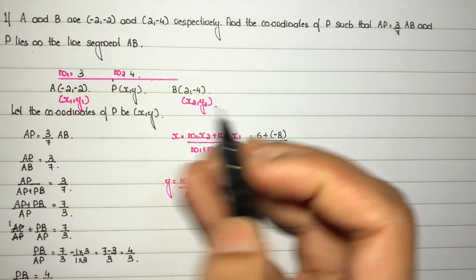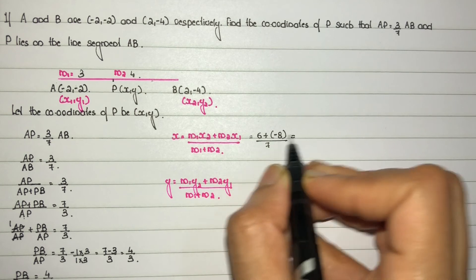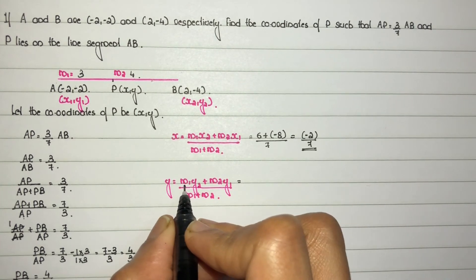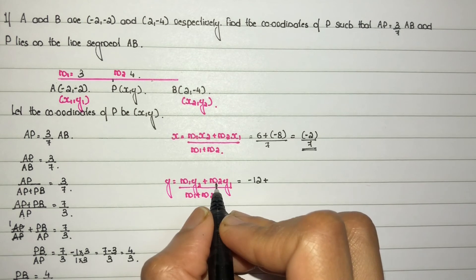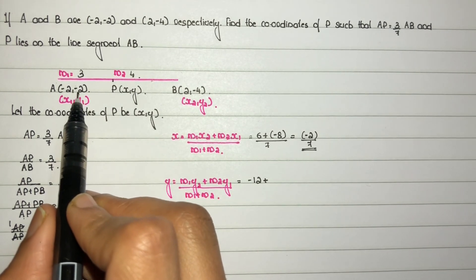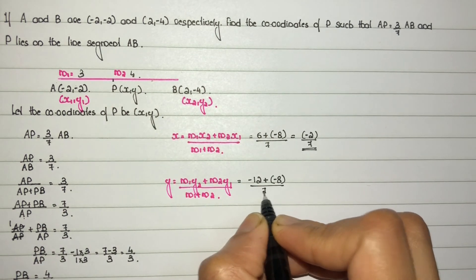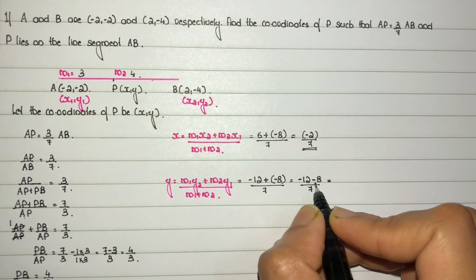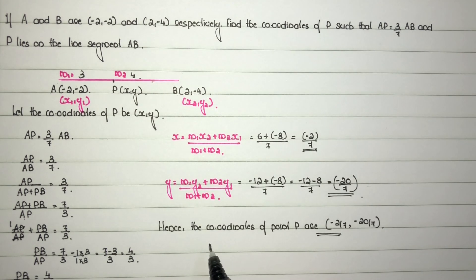So x = (6 - 8) / 7 = -2/7. For the y-coordinate: y = (M1·y2 + M2·y1) / (M1 + M2) = (3 × (-4)) + (4 × (-2)) all divided by 7 = (-12 - 8) / 7 = -20/7. Hence the coordinates of point P are (-2/7, -20/7).